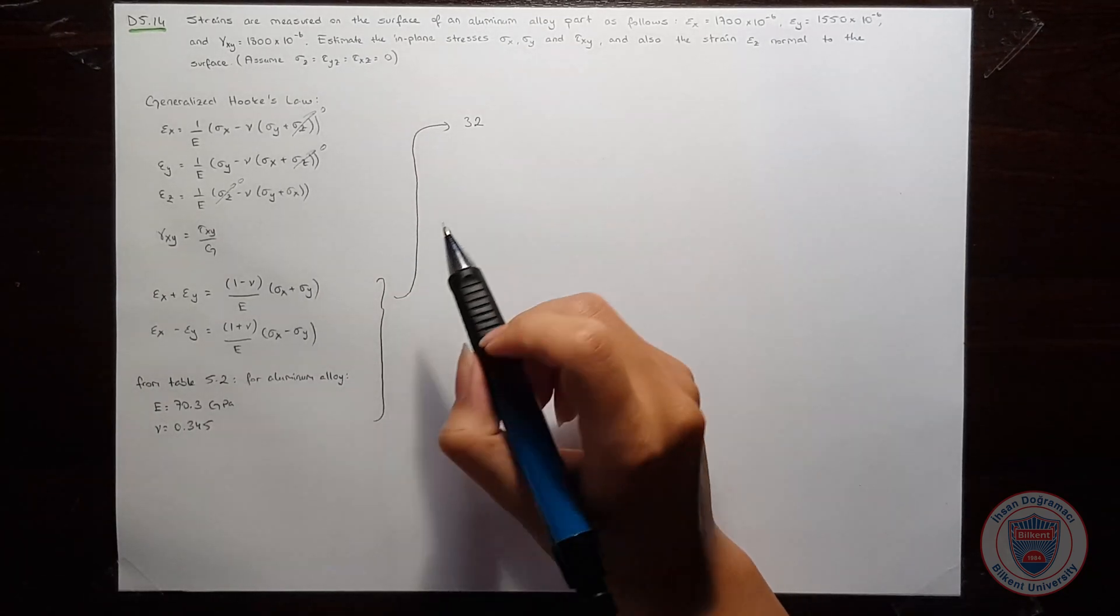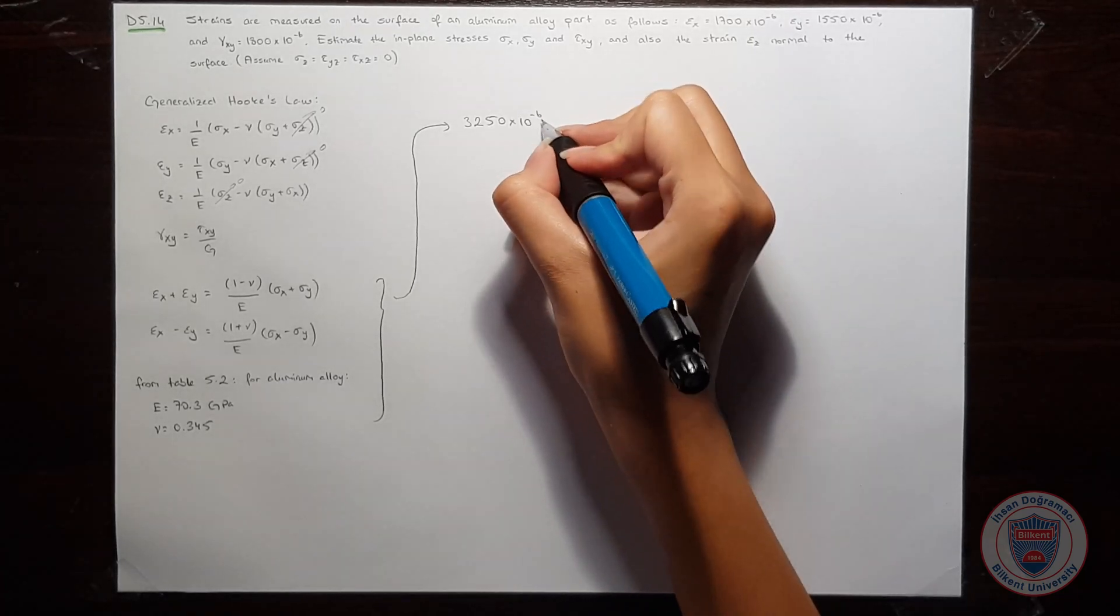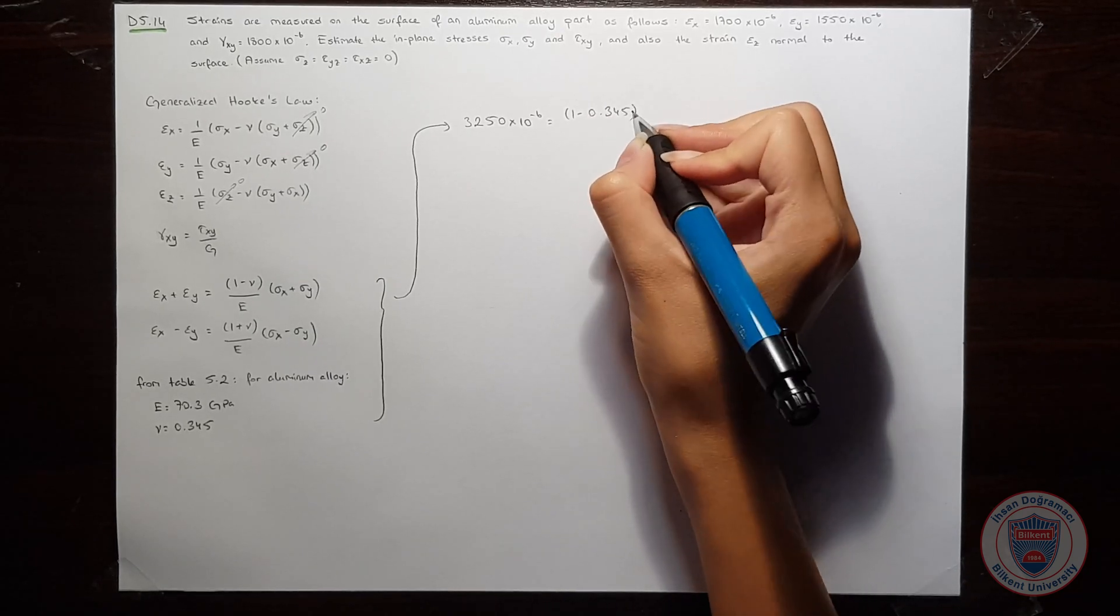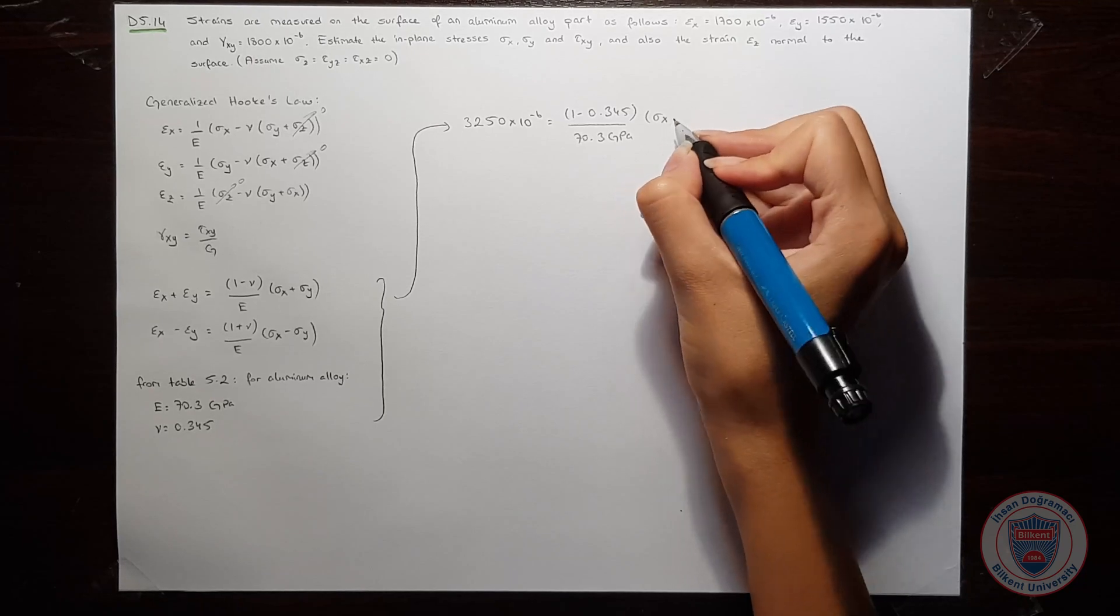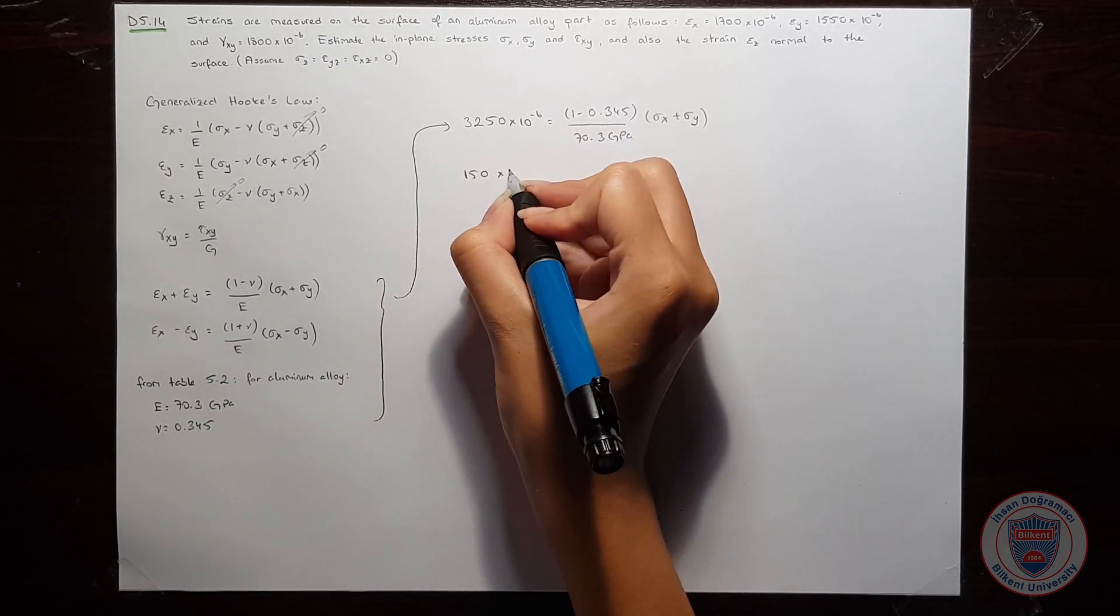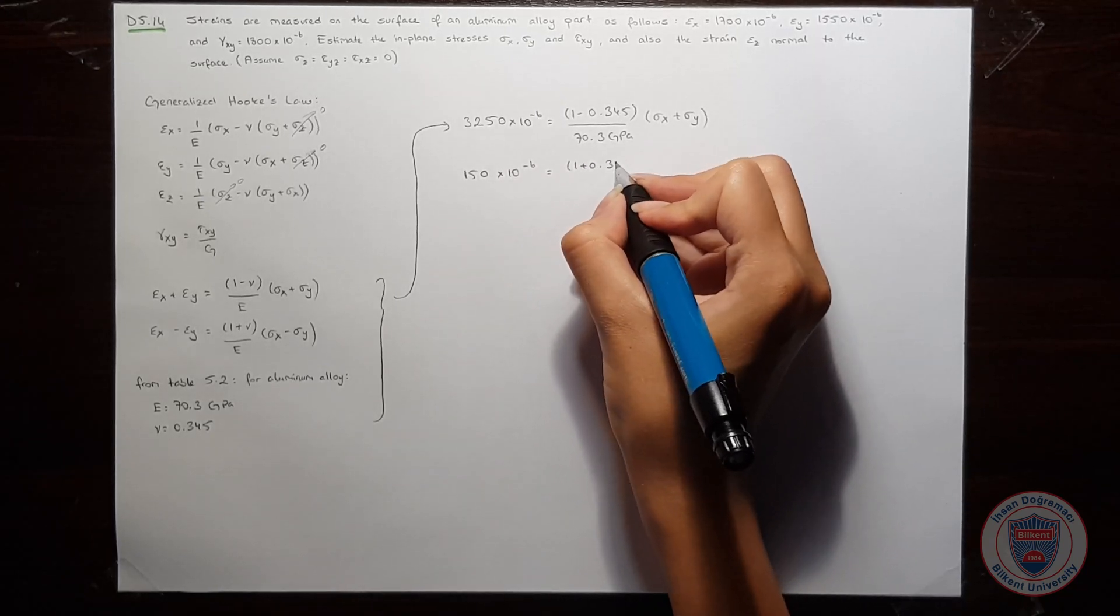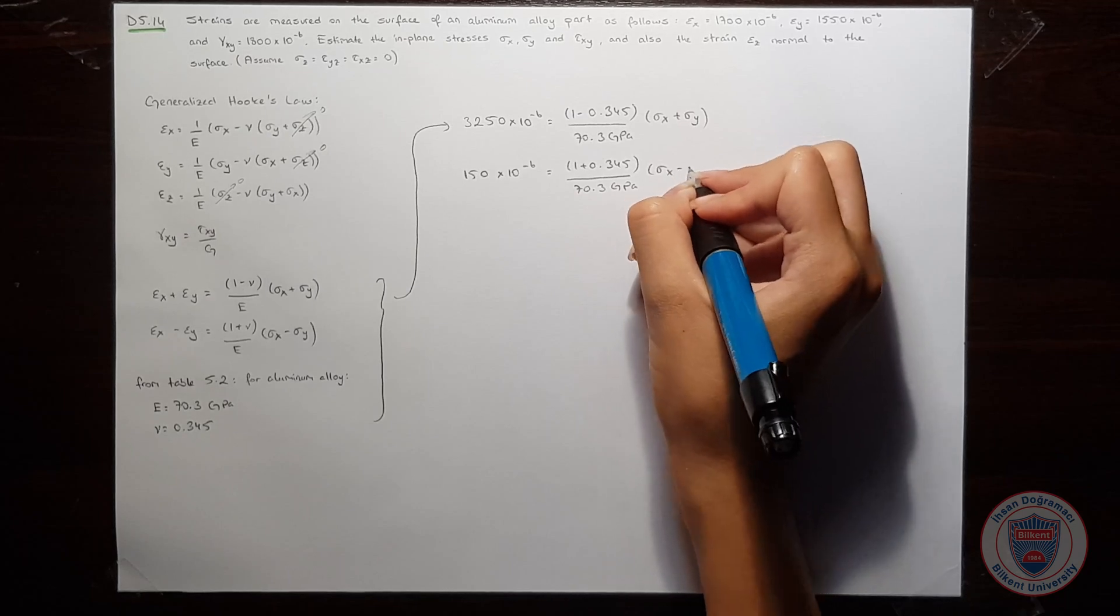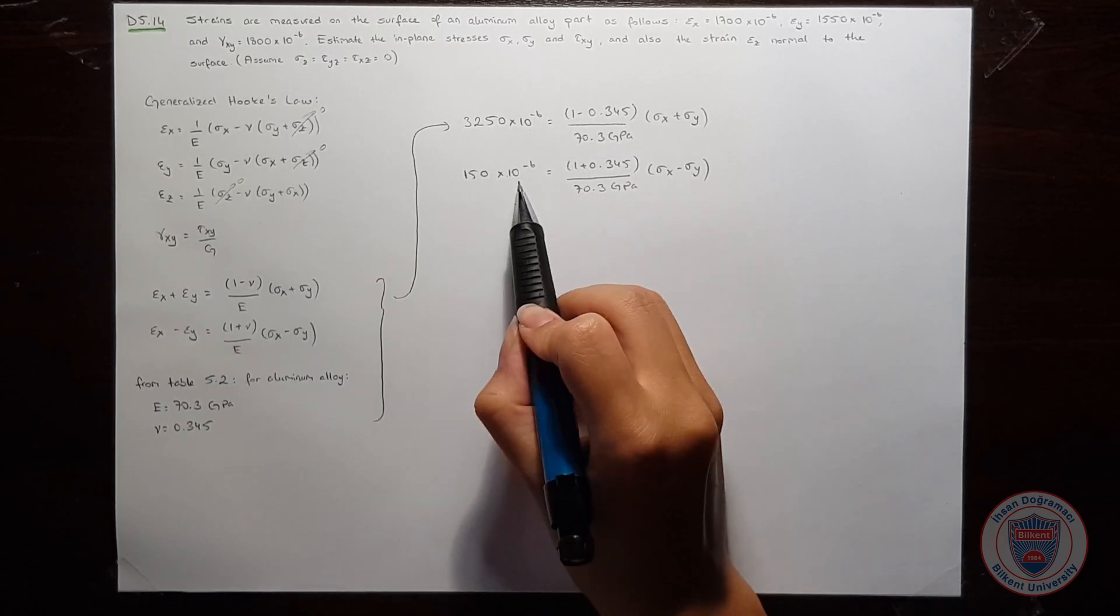We know that 3,250 times 10 to the power of minus 6 is equal to 1 minus 0.345 over 70.3 GPa times sigma x plus sigma y. And the other one is... I have epsilon x plus epsilon y here and epsilon x minus epsilon y here.